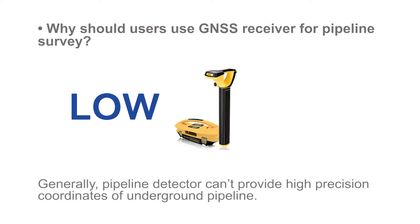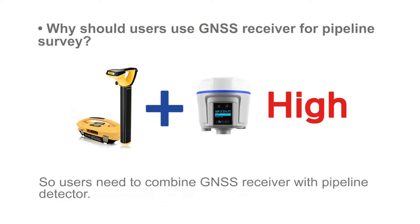Generally, a pipeline detector can't provide high-precision coordinates of underground pipelines, so users need to combine a GNSS receiver with a pipeline detector.